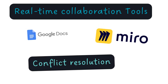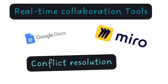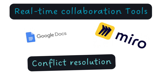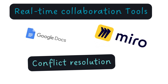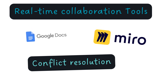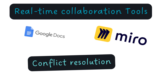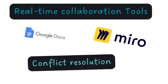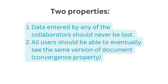In this video we'll learn about how real-time collaboration tools like Google Docs and Miro work behind the scenes to enable multiple users to work together seamlessly on their platform, and how the backend of these tools handles conflict resolution automatically. There are two properties that these tools are supposed to satisfy.